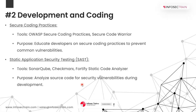The second stage is development and coding. The first area is secure coding practices — we have to educate developers on secure coding practices to prevent common vulnerabilities like the OWASP Top 10. Your product comes from your developers' IDE, which is the birthplace of the application, so we have to control security vulnerabilities from there using tools like Security Code Warrior.